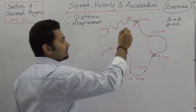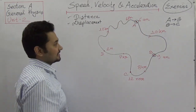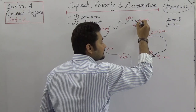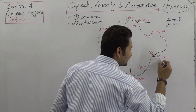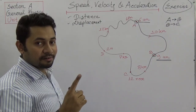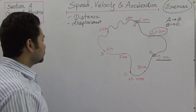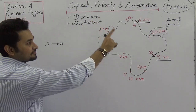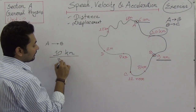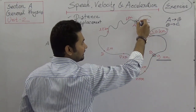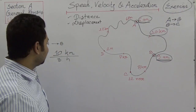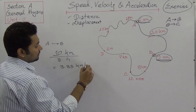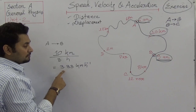We can see it's not a linear distance — the cyclist is moving in a non-straight path, like a zigzag route. From A to B, the cycle started at 6 a.m. and arrived at B at 9 a.m., so it took 3 hours to cover a 10 km route. From A to B, it travels 10 km in 3 hours. So the average speed is 10 ÷ 3 = 3.33 km per hour.